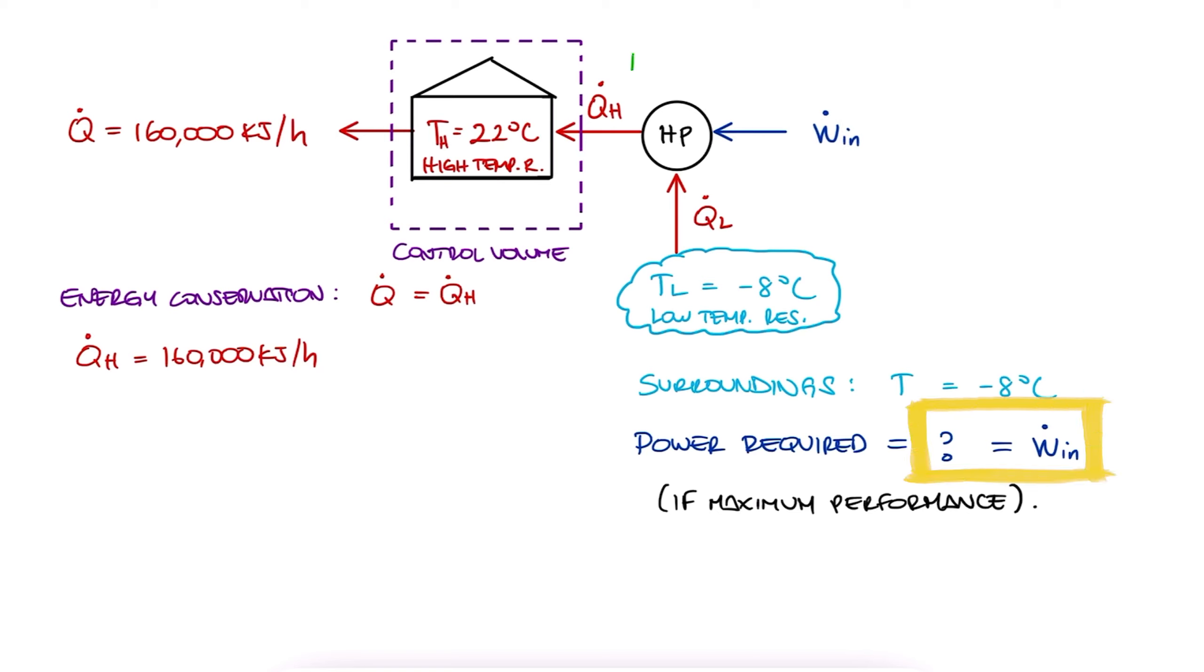To find this work, which is the difference between QH and QL, we need to find QL. So, our goal is to find how much heat is being drawn from the exterior of the house.